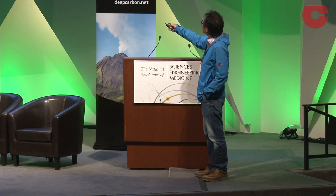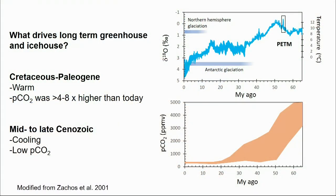Right up here, this is oxygen isotopic compositions of carbonates through time — it's a proxy for temperature. You can see over the last 70 million years it was a greenhouse climate, and it gradually cooled down. Now we're in basically an icehouse climate. What causes that — of course there's albedo and solar insolation — but if you look at PCO₂ in the atmosphere, you can see that overall there's been a decline. So in large part, on these long timescales, at least within the Phanerozoic, what controls climate is how much CO₂ is in the atmosphere.